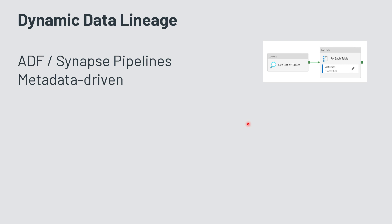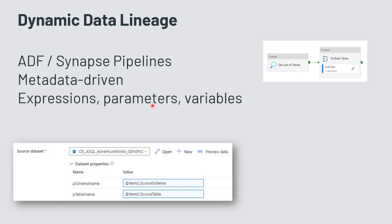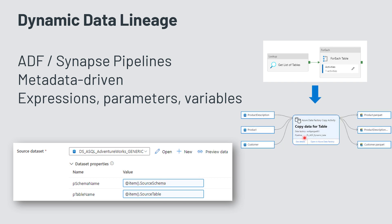It's not there if you just create the pipeline — you need to execute it. One thing we often use in projects is called dynamic or metadata-driven pipelines. Instead of hard-coded copy activities, we use config tables and a lookup activity that queries a list of tables and objects to load, a for-each loop, and parameterized generic datasets that use item variables and their properties.